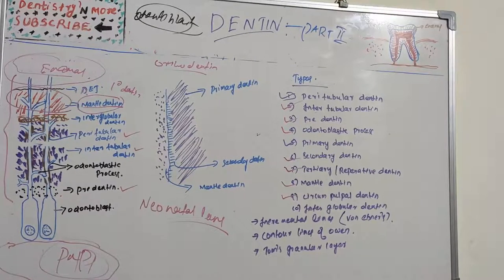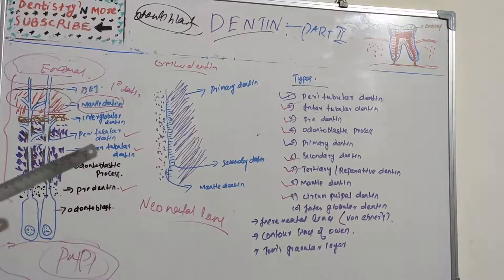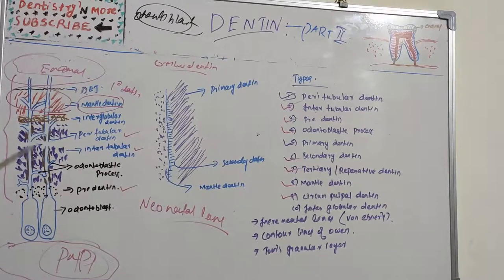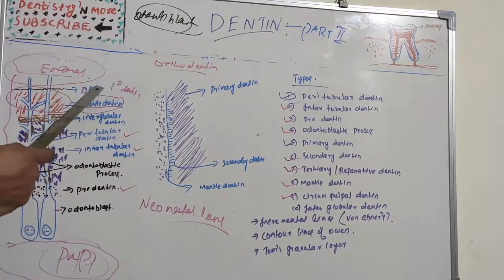Now we have interglobular dentine. Sometimes mineralization of dentine begins in small globular areas that fail to fuse into a homogeneous mass. This results in zones of hypomineralization between the globules, and these zones are called interglobular dentine. It is formed in the crowns of teeth in the circumpulpal dentine, just below the mantle dentine.